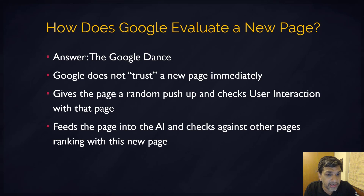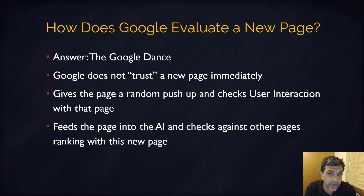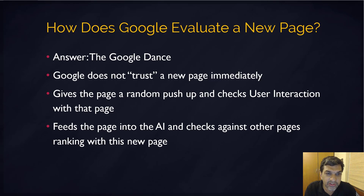The Google dance is tied directly in with this. When a fresh page is published, Google doesn't rank it high up immediately. It lets it go through something called a Google dance. You'll notice that your page's rankings fluctuate a lot when you publish a new page, because Google doesn't trust that page yet. It doesn't have any user signals for that page — it doesn't know whether the page has good quality, or how users are interacting and behaving on that page.